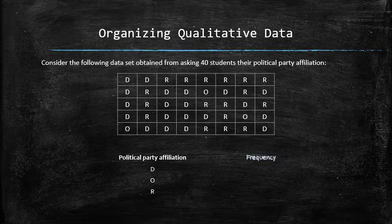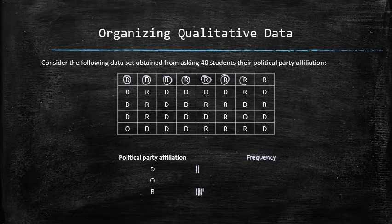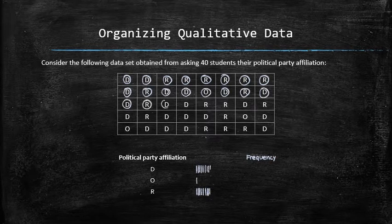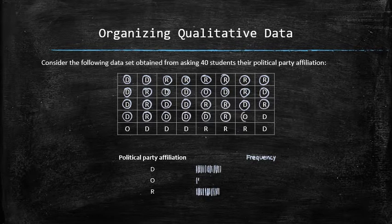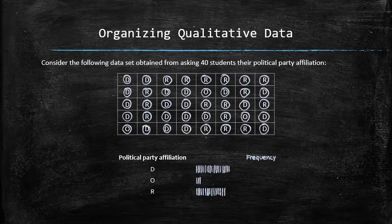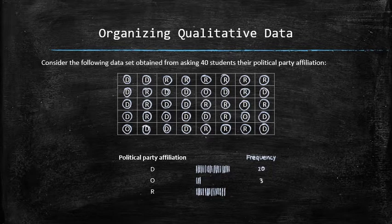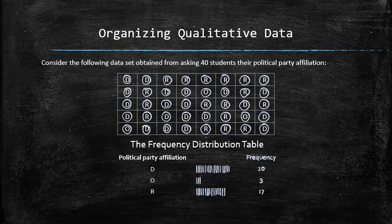To obtain the frequencies, we are going to go through the data and use tally. Adding up all the tallies gives us the following frequencies: 20, 3, and 17. A table that lists the distinct values along with the frequencies is called the frequency distribution table.